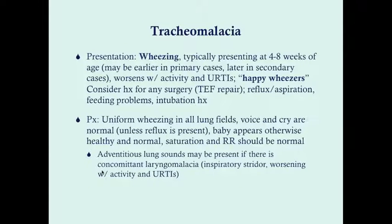The presentation of tracheomalacia is wheezing, typically presenting at 4 to 8 weeks of age in primary cases. In secondary cases, it presents when the insult has set in. Primary tracheomalacia is the most common form; however, if something like a mediastinal mass develops, it can present much later. Symptoms worsen with activity and upper respiratory tract infections, because URTIs narrow the airway further and increase resistance.